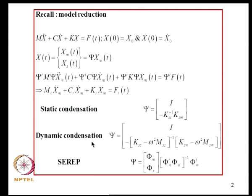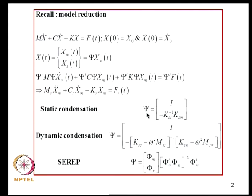In dynamic condensation we again partition the degrees of freedom into master and slave; in addition we specify a frequency at which the condensation is done, so the Psi matrix is given accordingly. If one computes the natural frequencies and mode shapes of the reduced system, the natural frequencies from this model need not agree with those of the larger model—that is certainly true for static condensation. In dynamic condensation, if omega is chosen to coincide with one of the natural frequencies of the larger system, one of the frequencies in the reduced model will match.